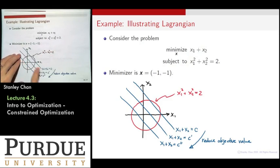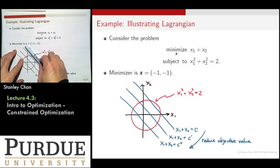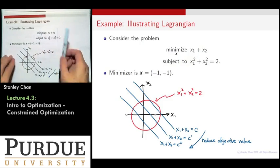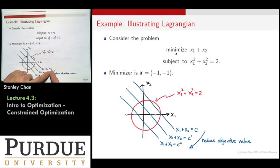So I can draw the circle, and then I can start to move this blue line higher and lower. Now, of course, if I have a blue line here, I will have a cost value of c. If I move to there, I will have another value c prime, and go there, you'll have a c prime prime. Now, which one gives you a higher cost?